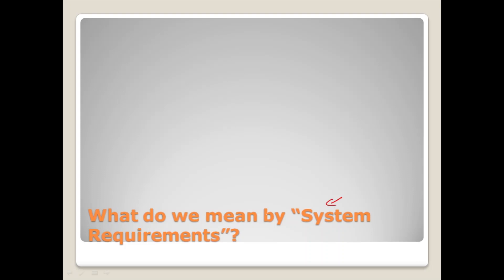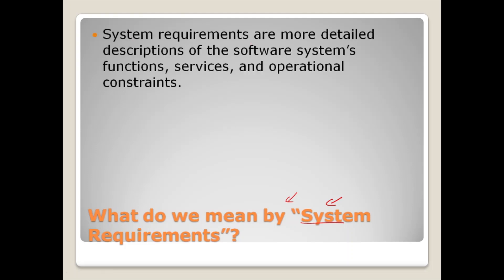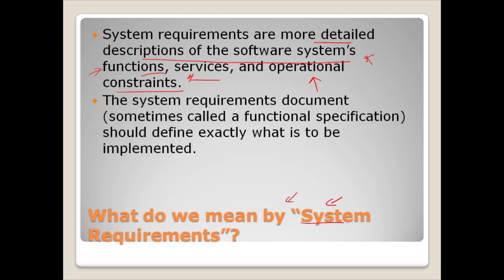The other requirement we usually encounter is the system requirement. System requirements are more detailed descriptions of the software system's functions, services, and operational constraints. The system requirement document, often called a functional specification, should define exactly what is to be implemented. It may be part of the contract between the system buyer and the software developer.